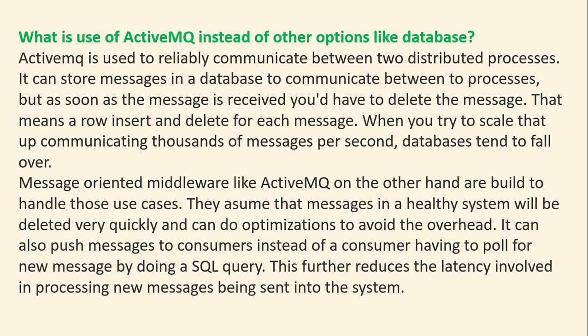What is the use of ActiveMQ instead of other options like a database? ActiveMQ is used to reliably communicate between two distributed processes. While it can store messages in a database, each message would require an insert and delete, which causes databases to fall over when scaling to thousands of messages per second. Message brokers like ActiveMQ are built for these use cases — they assume messages will be deleted quickly and can push messages to consumers instead of requiring consumers to poll via SQL queries, reducing latency.